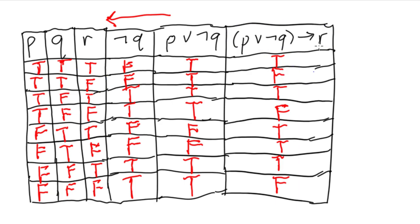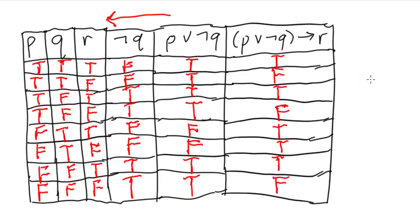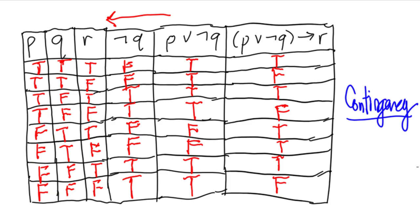Since the final column contains a mix of true and false, this is not a tautology (all true) and not a contradiction (all false). A combination of true and false is called a contingency. Usually we will see contingencies in our answers.